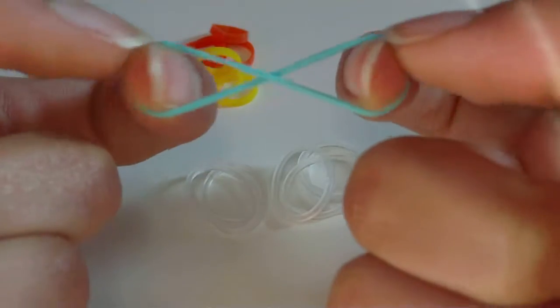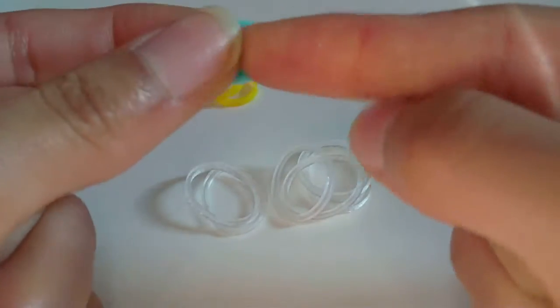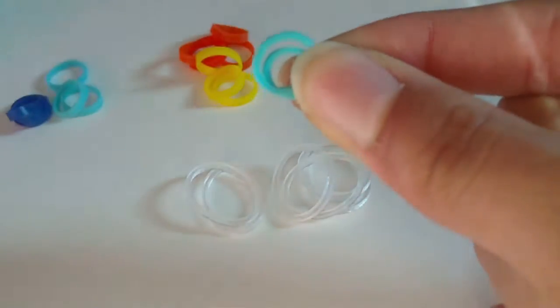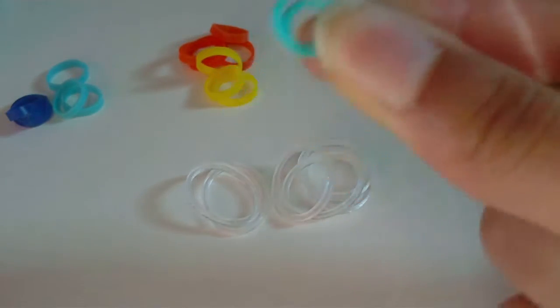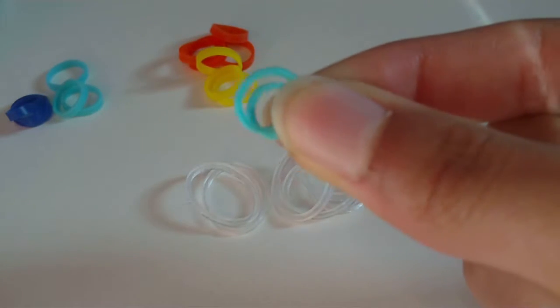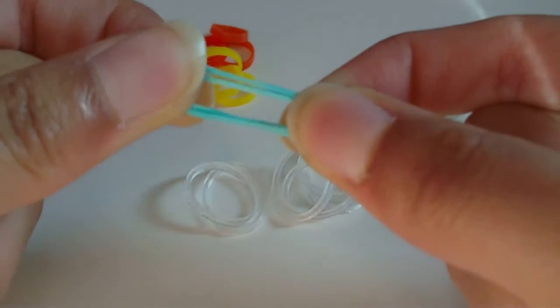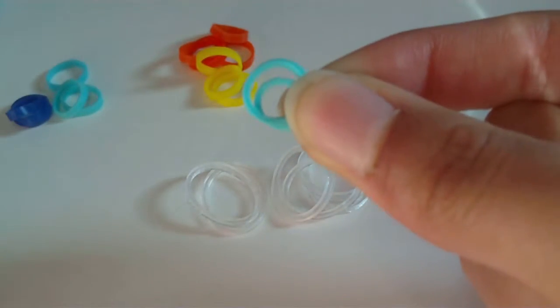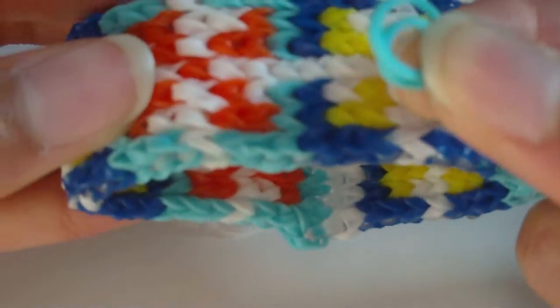But if you only have regular bands, what you can do is take the regular band, twist it, and fold it like a book back on top of itself. What you just did is made a cap band, and you can just use this band as a single rubber band and it'll end up being about the same size as an alpha band when it's loomed.